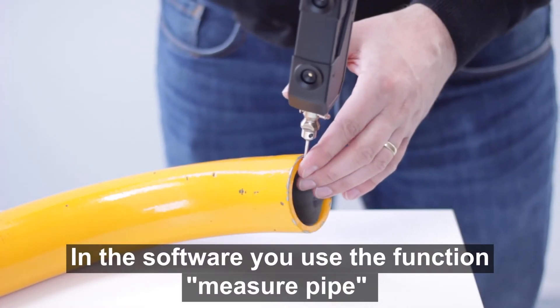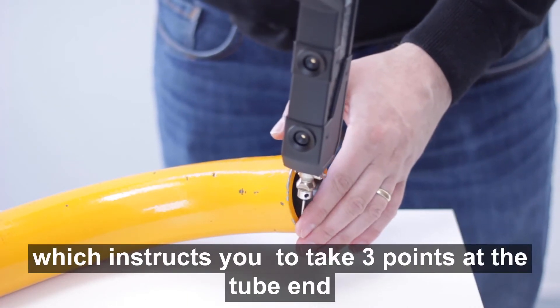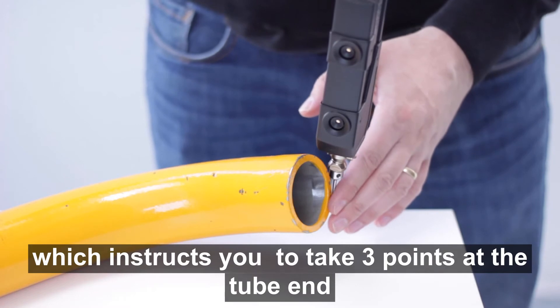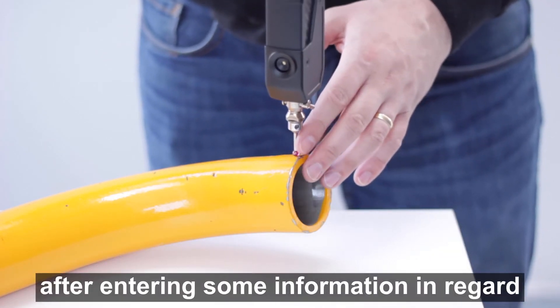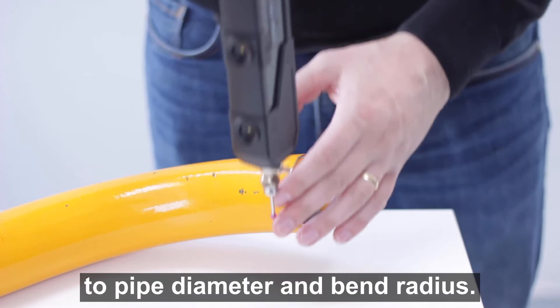In the software, you use the function measure pipe, which instructs you to take three points at the tube end after entering some information in regard to pipe diameter and bend radius.